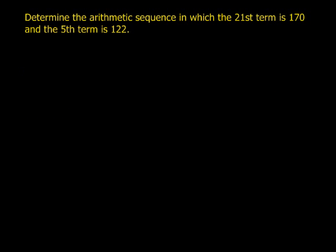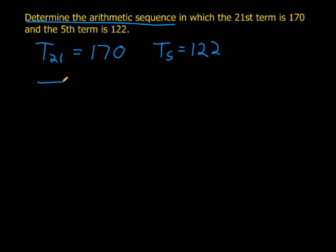One more example. Determine the arithmetic sequence in which the 21st term is 170, and the fifth term is 122. So we have T21 is equal to 170, and T5 is 122. Now, what this simply means is that to determine the arithmetic sequence, either we need to get the general term to find the arithmetic sequence, or just the first three terms would be sufficient as well. But either way, we only have the 21st and the fifth term. So let's just at least put in what we do know.